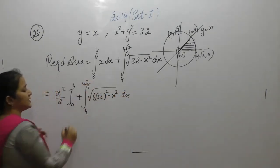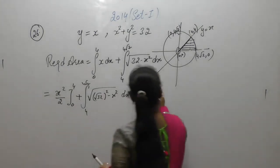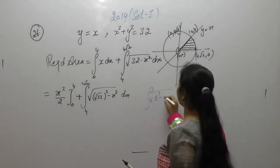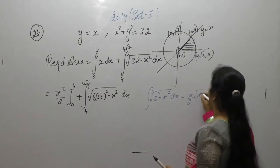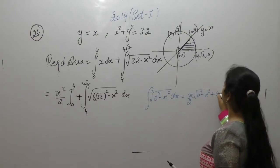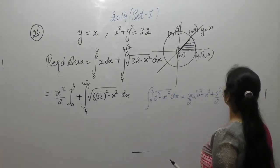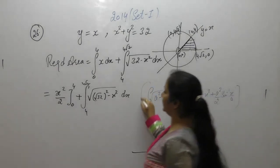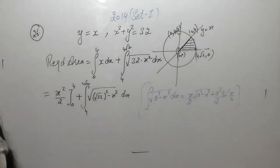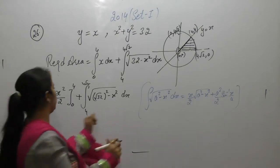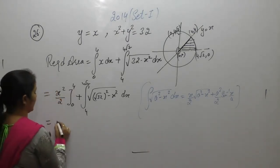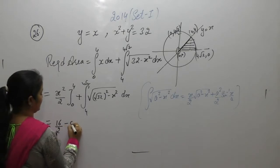For the circle part, we apply the standard formula: the integral of √(a² − x²) dx equals (x/2)√(a² − x²) + (a²/2) sin⁻¹(x/a) + C. Here a² = 32, so a = 4√2. Now apply this formula with the limits from 4 to 4√2.